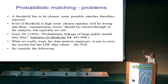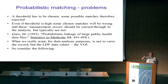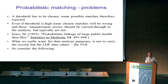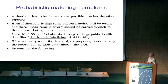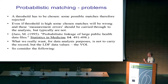With probabilistic record matching, what's typically done is you take these probability weights, set a high threshold designed to minimise the probability of a false positive — a match that's actually the wrong match. Anything above the threshold is accepted as a true match. But there's still some error associated with that, and it's typically not taken into account in later analysis. Most of this literature is concerned with carrying across records, whereas what we actually want to carry across is just the specific data values we want, which is a subset of that information.